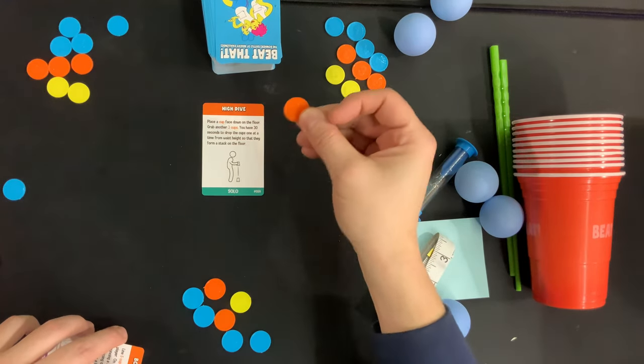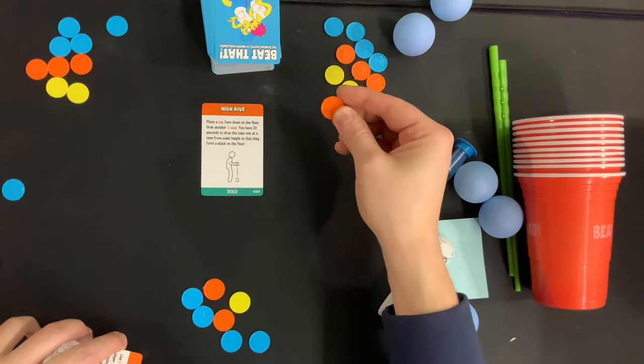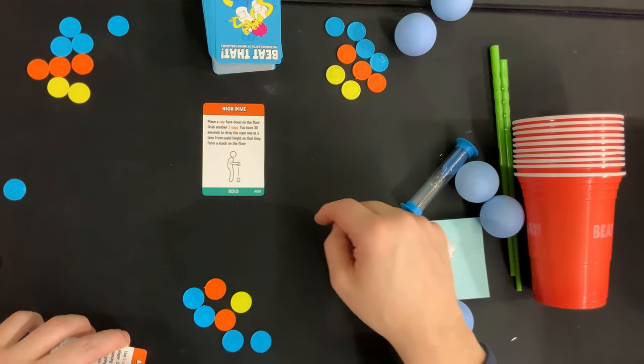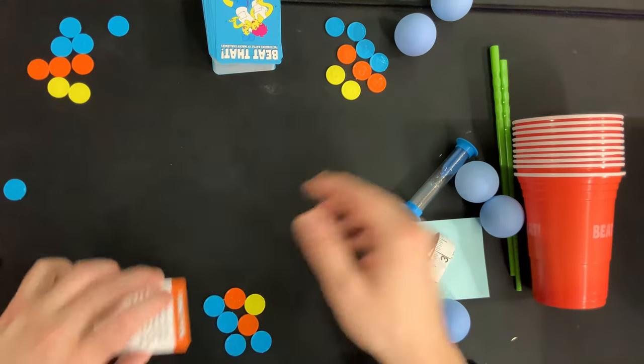If you're successful then you get to bank whatever chip you wagered into your victory point pile. And if you're unsuccessful then the chip goes out of the game. Once everyone has had an opportunity to complete the solo challenge move on to the next player who's ready to start the new round.